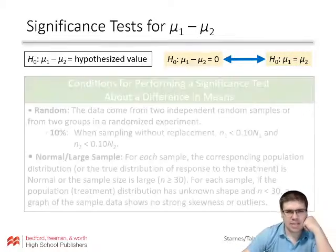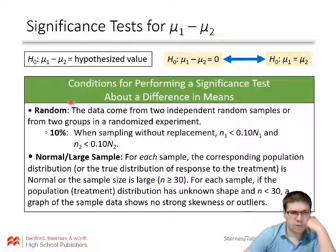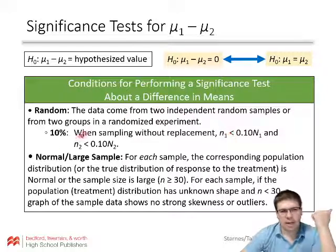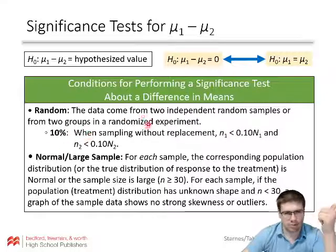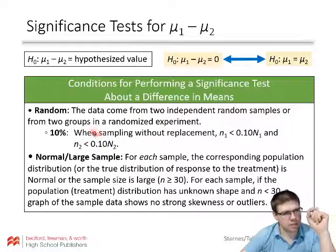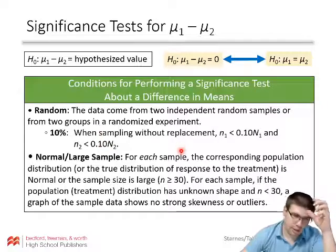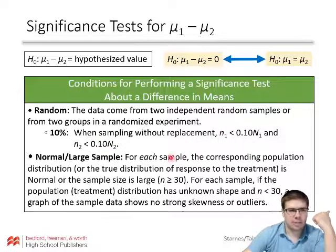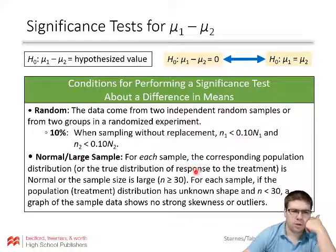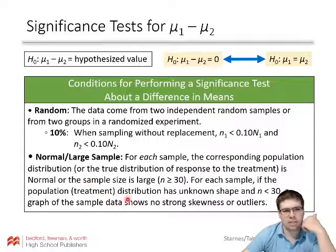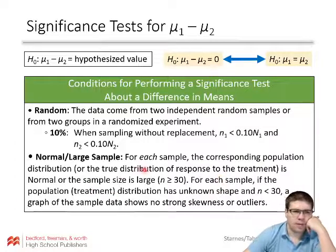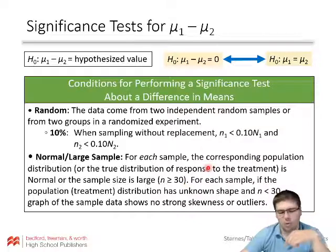When we go through this process, the conditions are the same: the data come from two independent random samples from two groups or a randomized experiment — either random samples or randomizing — but there must be randomness to ensure we can trust those x-bars. When sampling without replacement, we need the sample size to be less than 10% of the population. Then we need the normal/large counts for each sample: either the population distribution is normal, or the sample size is large. If the sample size is small and we don't know, we can do the no strong skewness or outliers check.